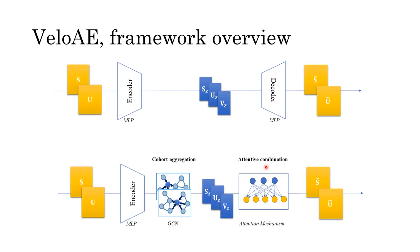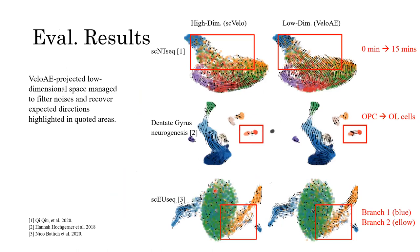And the second one called attentive combination is designed to capture the gene profile structures in the low dimensional representations. So we hope that in the low dimensional space, the representations could be more informative and capture the structure of the original dataset.